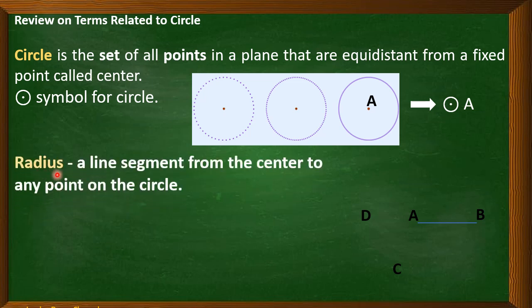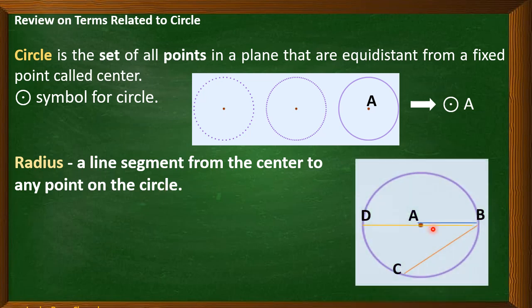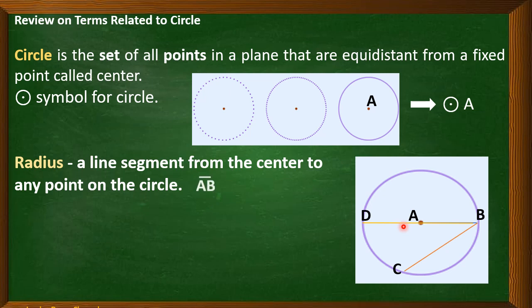Now, let's have radius. Radius is a line segment from the center to any point on the circle. Let's have here our circle. Our radius here is, example of a radius, is line segment AB. We can also have line segment AD. The symbol is line segment at the top of the two letters.